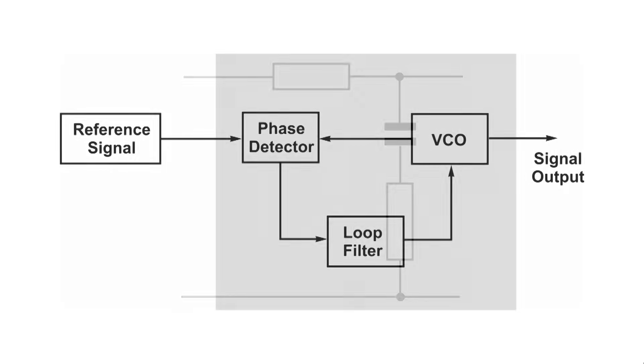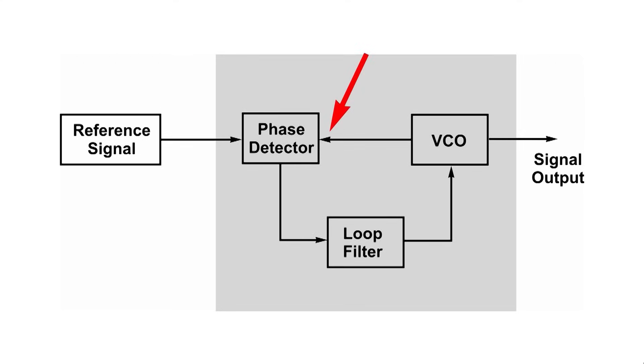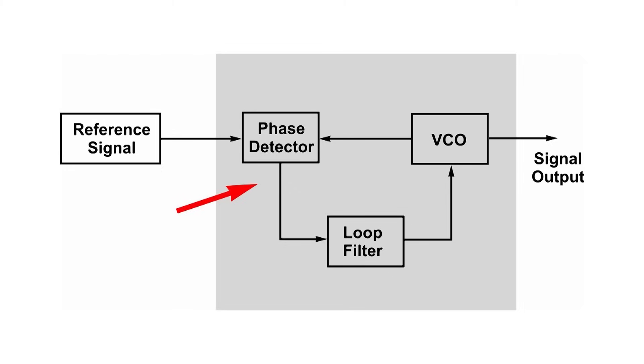So if we look at the phase-locked loop as a whole, we see that these three main blocks are interconnected. The phase detector takes inputs from both the reference and the voltage-controlled oscillator and it produces an output proportional to the difference between them. This different voltage then passes through the loop filter to reduce the high-frequency components, and then it's applied to the VCO to control its frequency.